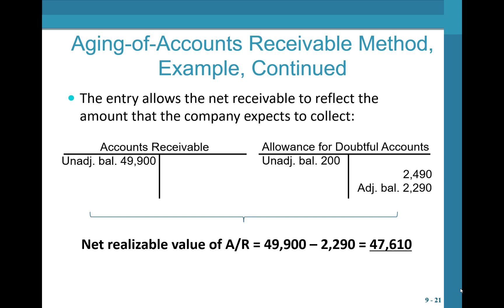By posting that adjusting entry, we allow the net receivable amount to reflect what the company expects to collect. The net realizable value is $49,900 minus the $2,290 allowance for doubtful accounts, which gives $47,610.